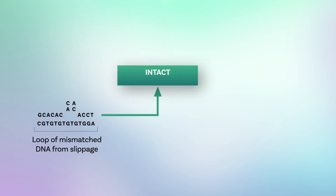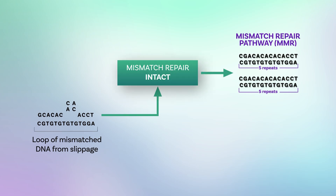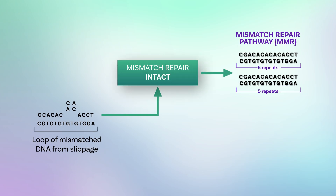Let's start with the essentials. Normal cells have a mechanism called mismatch repair or MMR that ensures DNA is accurately copied without errors during natural cell growth and division. I like to think of this pathway as a molecular spell check that's designed to correct errors.